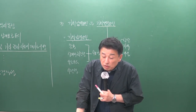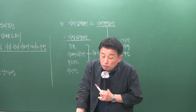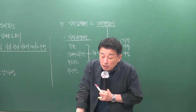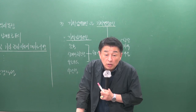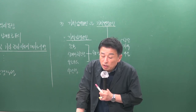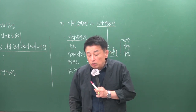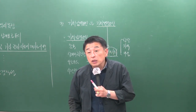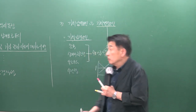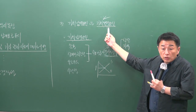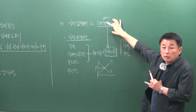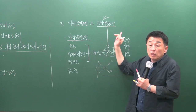6번 문제에서 가치발생요인 및 형성요인에 관한 설명 중 틀린 것을 물었을 때, 1번 보기에서는 효용, 상대적 희소성, 유효수요 세 가지 발생요소의 상호작용으로 가치가 발생한다고 설명합니다. 4번 지문에서 가치발생요인에 영향을 주는 요인을 가치형성요인이라 할 때, 대상 부동산의 가치형성을 개별화·구체화시키는 요인은 지역요인이 아니라 개별요인입니다.